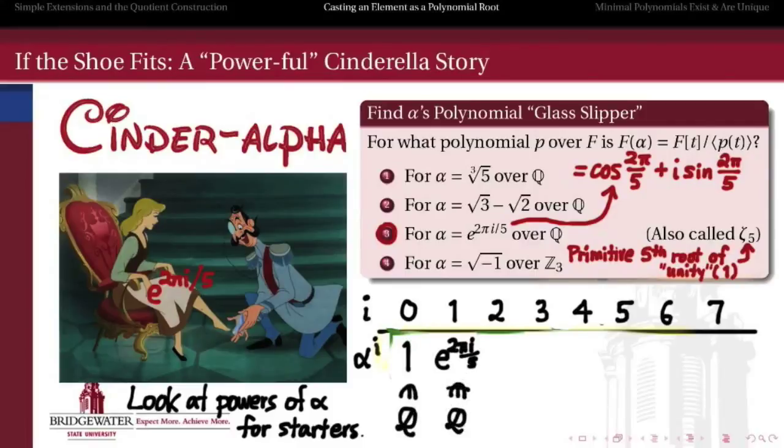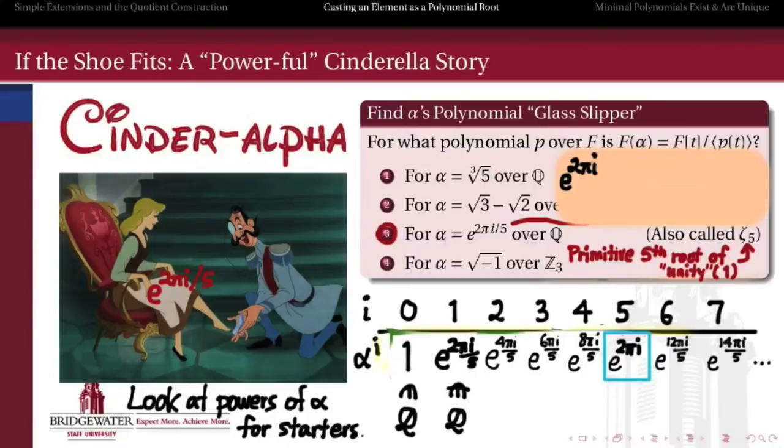The first, the zeroth power of alpha is rational. The first power of alpha is not rational. And because we've written alpha as a power of e, it's really easy to take its higher powers. So the second power will be e to the 4 pi i over 5, then we get e to the 6 pi i, 8 pi i, 10 pi i, 12, 14, and so forth. It's really easy to raise e to the something to higher and higher powers. And our question is, are any of these higher powers rational?